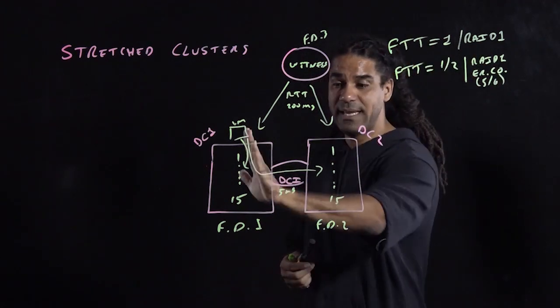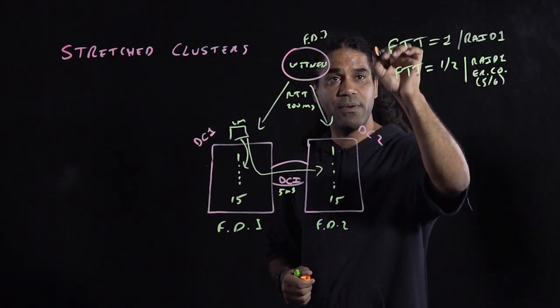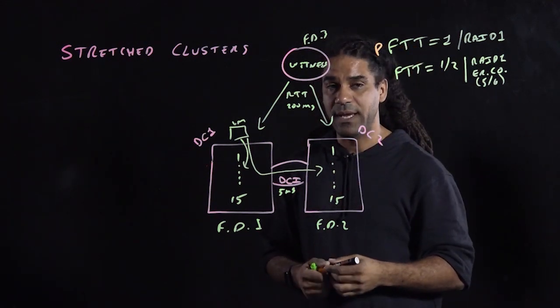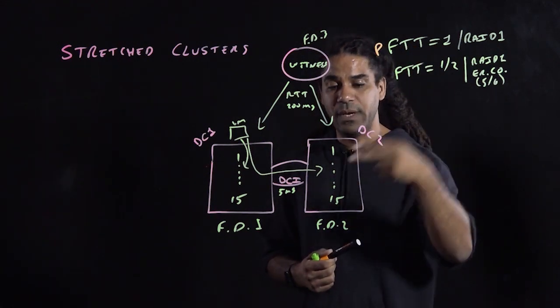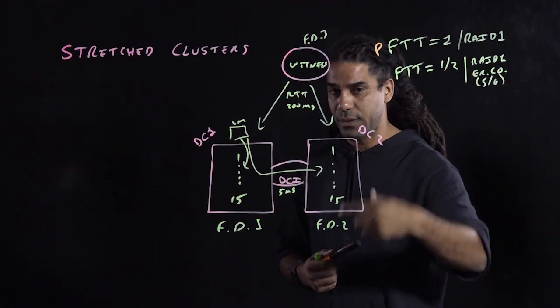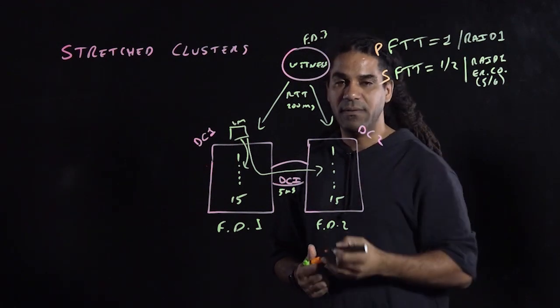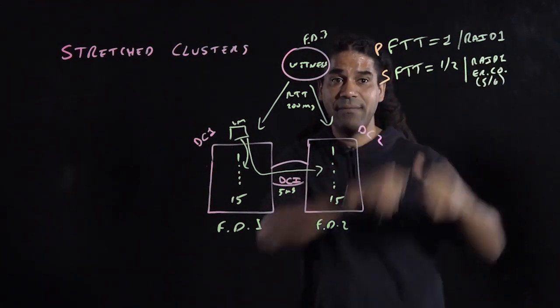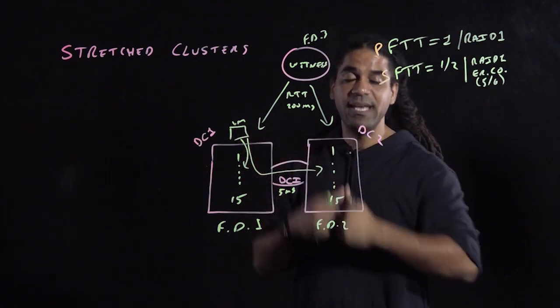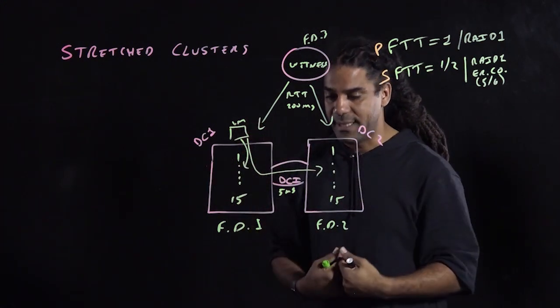Therefore, this failure to tolerate that's between data centers, we're going to call a primary failure to tolerate. And the other failure to tolerate, which is local to the data center, is going to be called the secondary failure to tolerate. So you have those options for the SPBM for each VM as you deploy them in this data center.